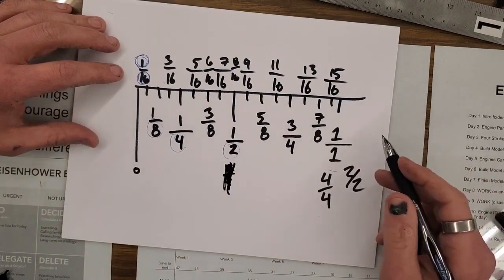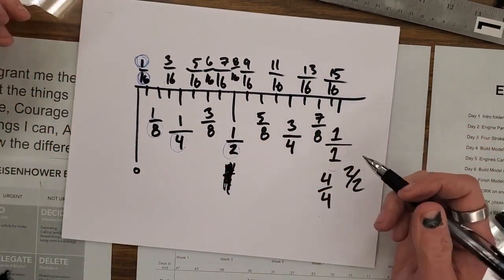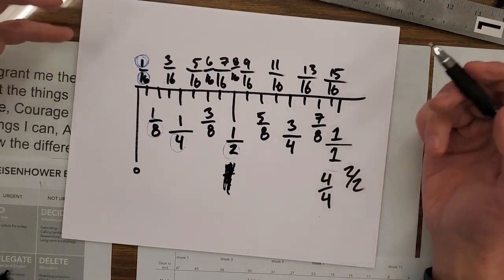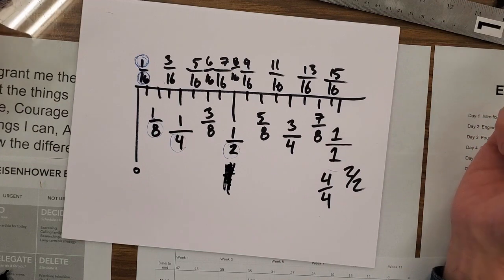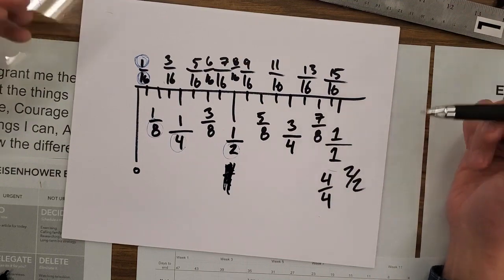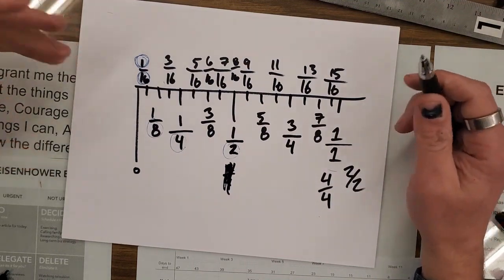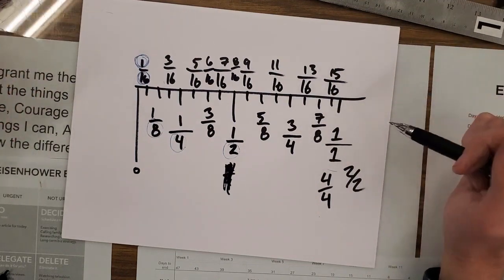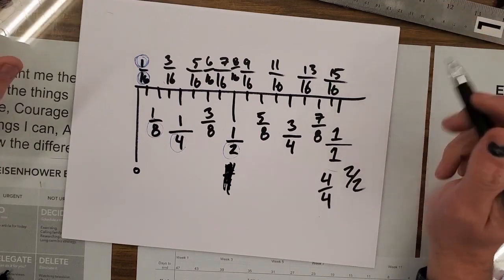We could go all the way across, then 64ths. Some rulers do go down to 64ths. After 64ths usually we switched to decimal and thousands of an inch, but we could do 128, 256, 512, 1,024, and continue that way. But nobody really measures with a ruler like that.